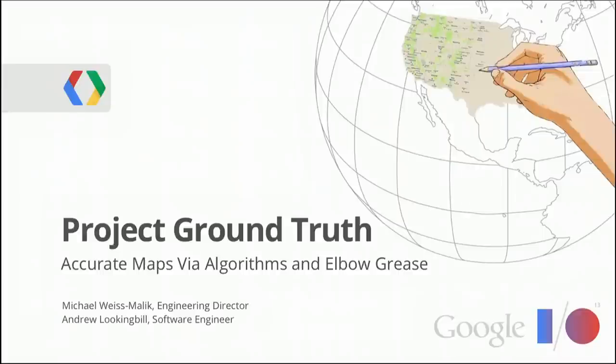MICHAEL WEIS: All right, I think we're going to get started. My name's Michael Weiss-Malek. I'm an engineering director on Google Maps. ANDREW WEIS: My name's Andrew Lookingbill. I'm one of the founding engineers on Project Ground Truth. MICHAEL WEIS: And we're here to talk about Ground Truth — accurate maps by algorithms and elbow grease.